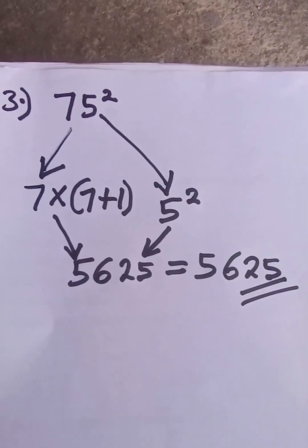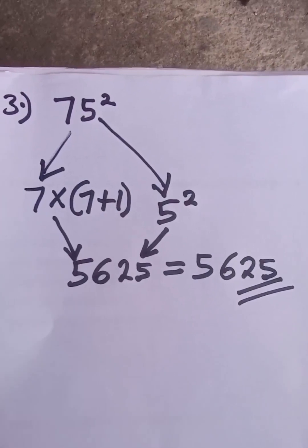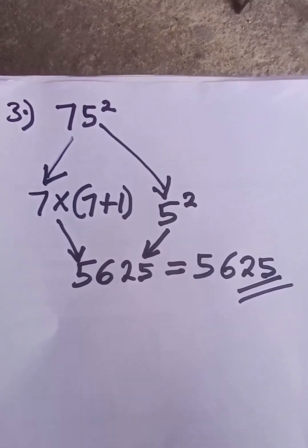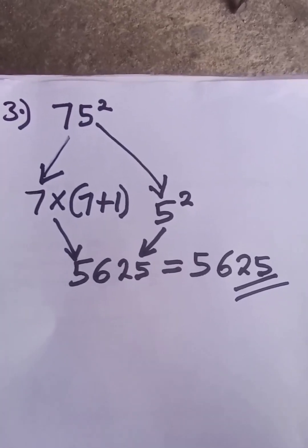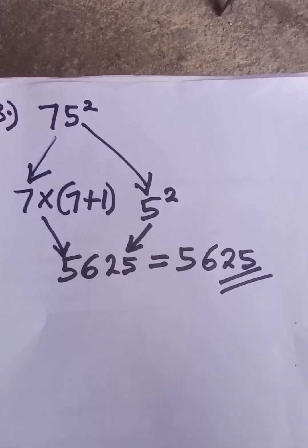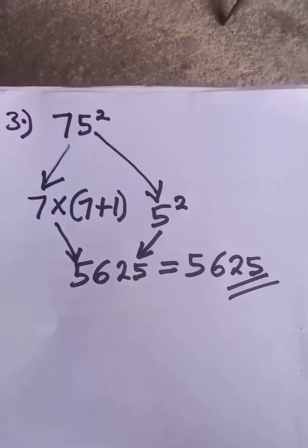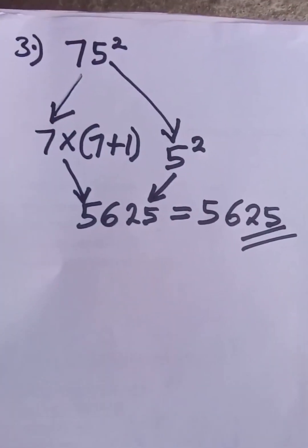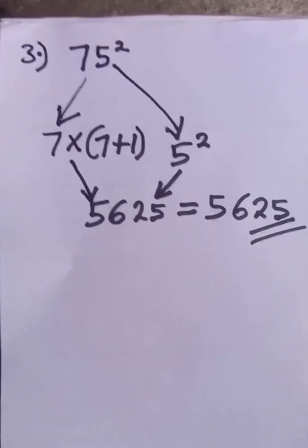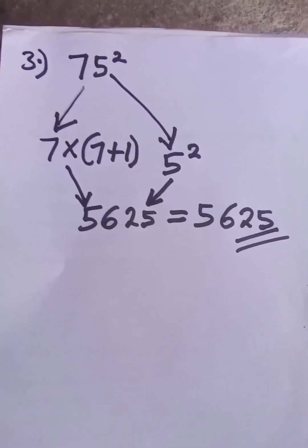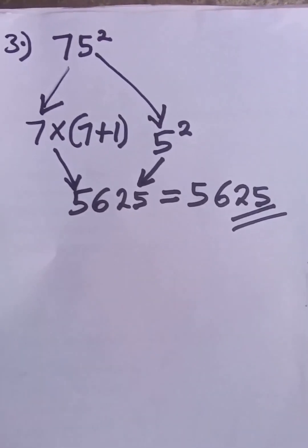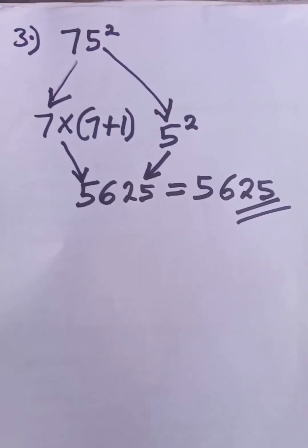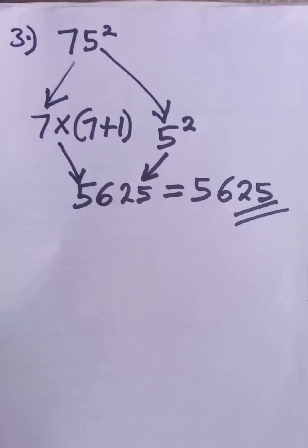With this trick you can get the square of any number ending in 5 — even numbers in the thousands, like 105, as long as it ends in 5. See you in the next video. Please subscribe to our YouTube channel and like our Facebook page.